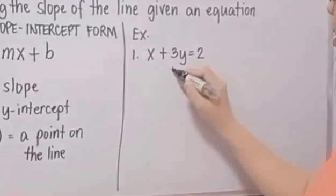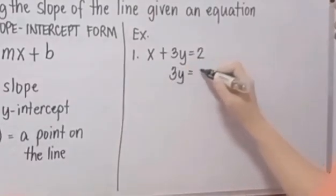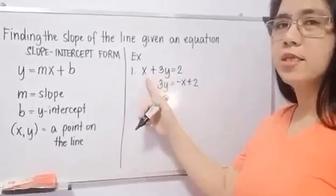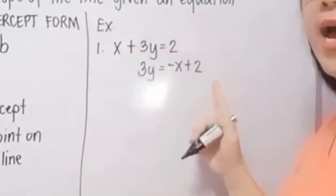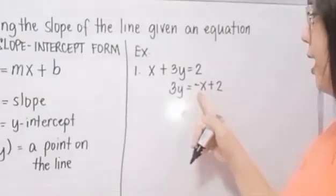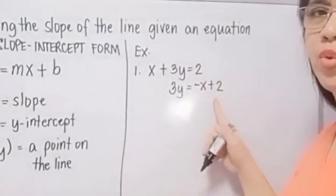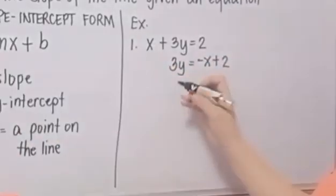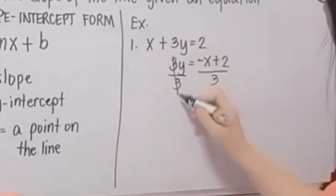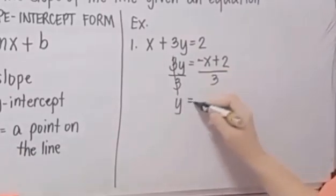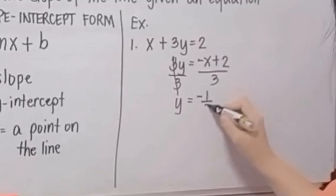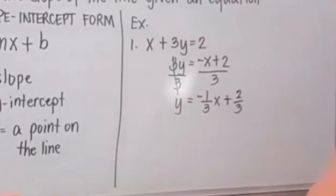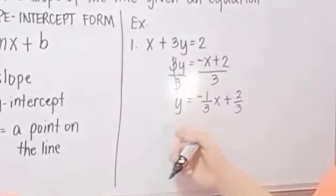3Y is equal to negative X plus 2. X will be transposed to the other side, becoming negative X, and then positive 2. Since we only need Y, we divide both sides of the equation by 3. Y becomes negative one-third X plus two-thirds. This is already in slope-intercept form.